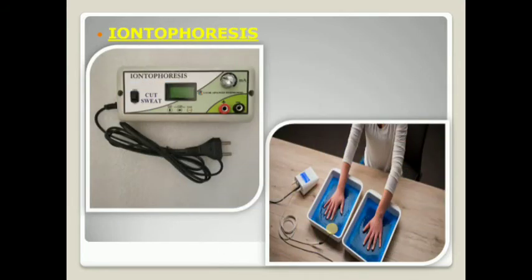Next is iontophoresis. Iontophoresis is a process of transdermal drug delivery by the use of voltage gradient on the skin. You can see in this picture there is a machine, and in the other picture there is a process in which we can treat hyperhidrosis. Hyperhidrosis is a condition that results in persistent and excessive sweating. You can treat hyperhidrosis by iontophoresis.